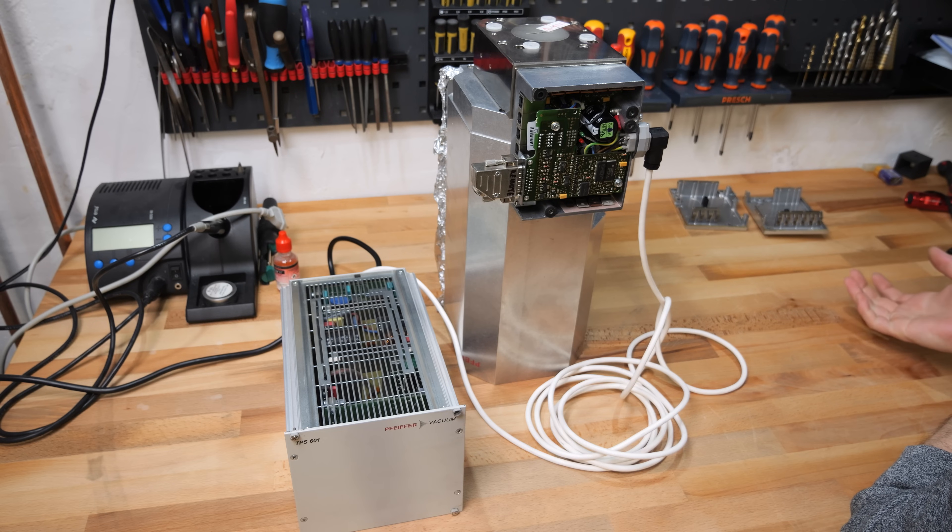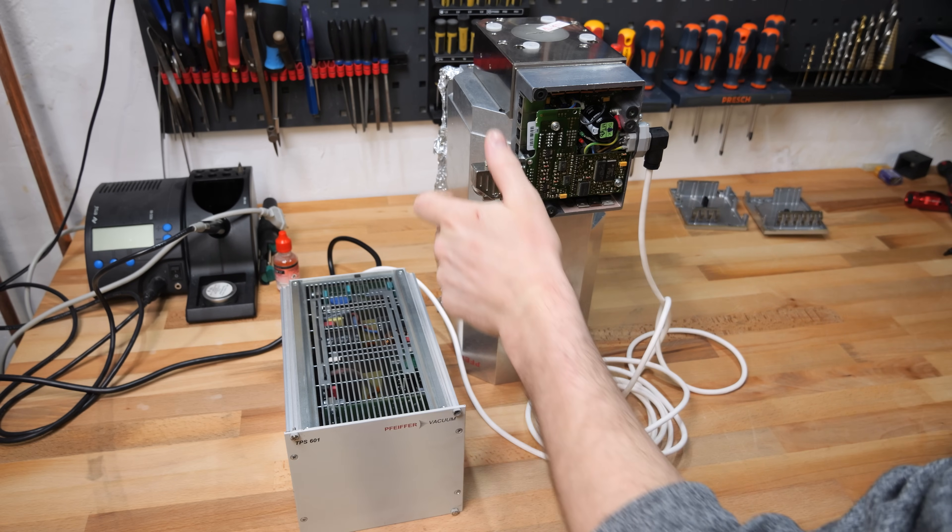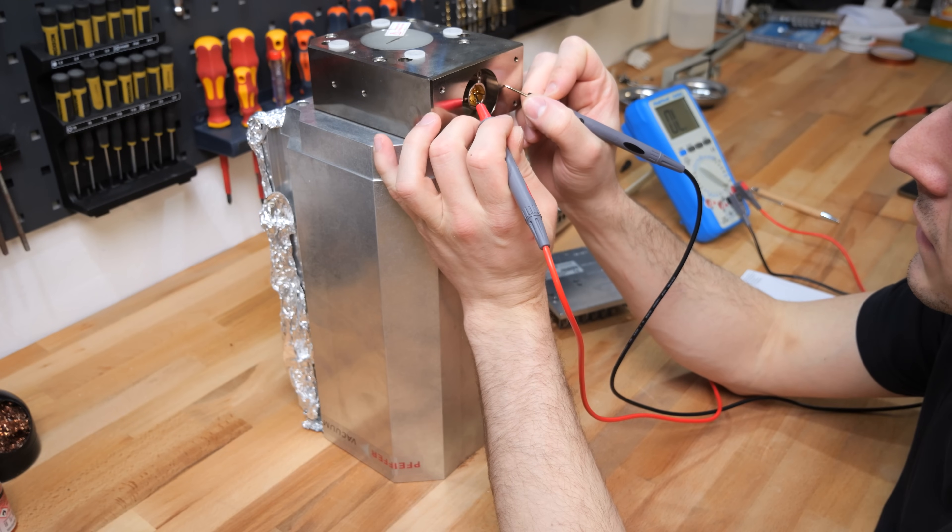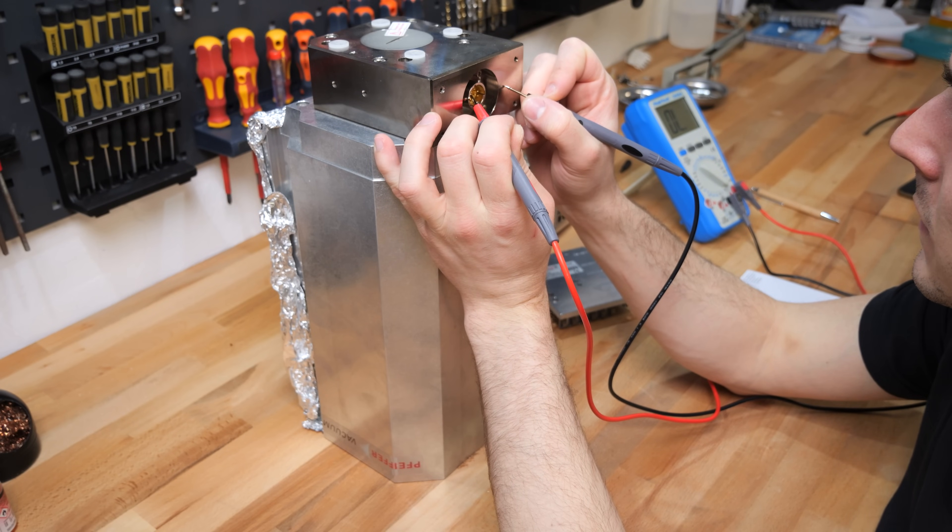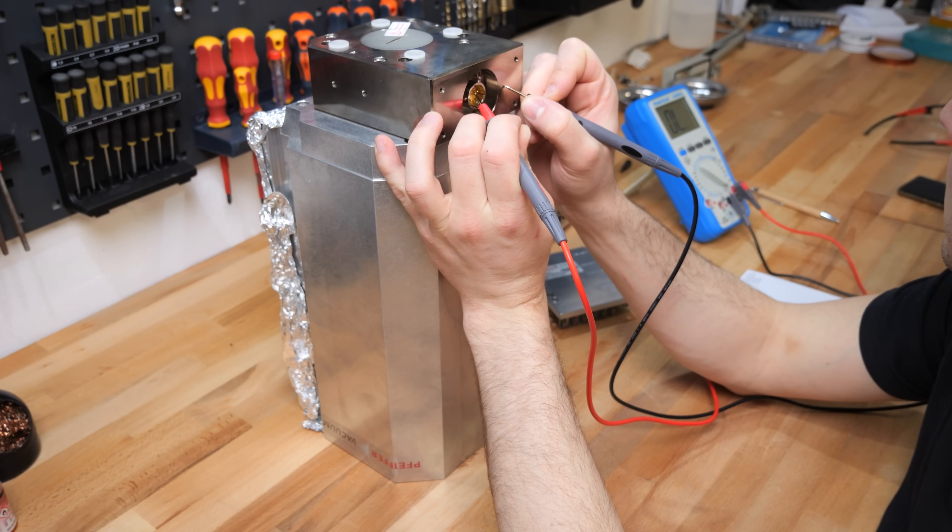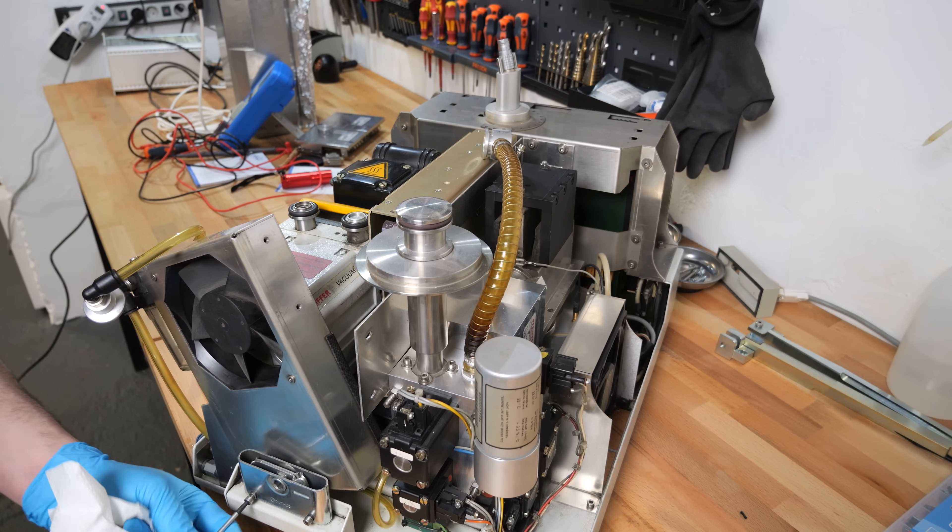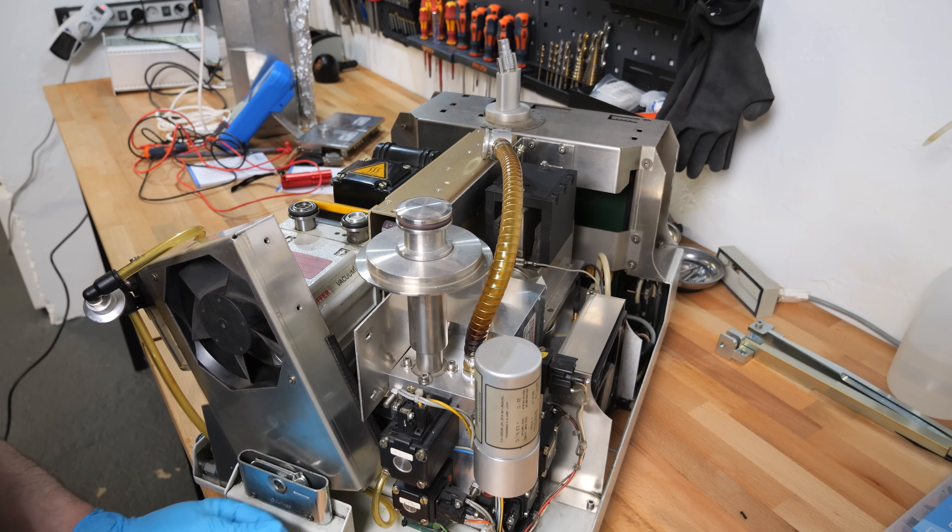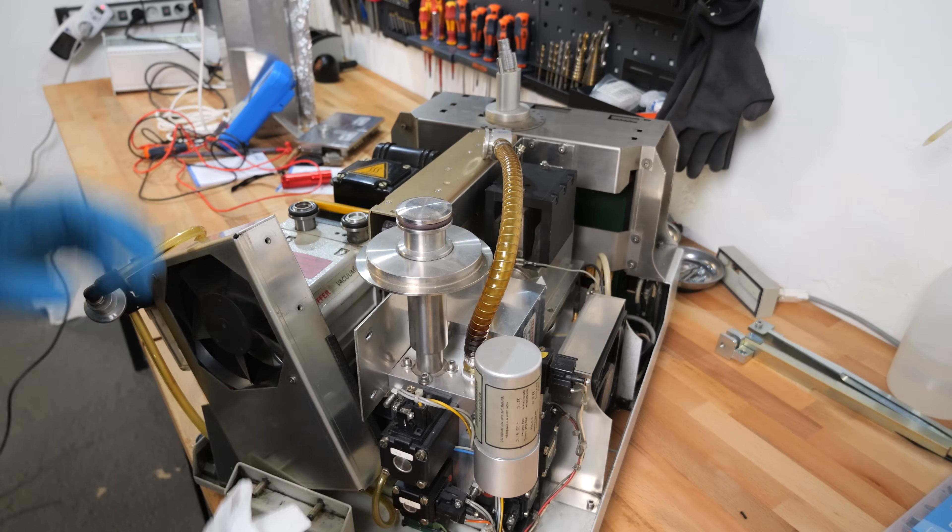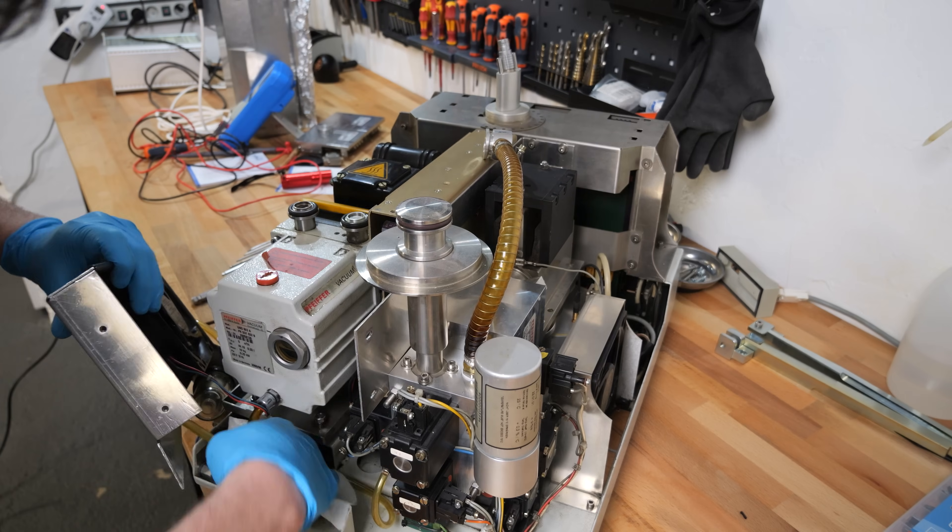Since I didn't know why the mass spectrometer had been decommissioned, I still wasn't sure whether the controller was defective or if the pump itself was faulty. To find that out, I needed another TC600 controller that I knew worked. The only one I had was installed in my helium leak detector, which I had repaired some time ago. So reluctantly, I decided to dismantle it again.